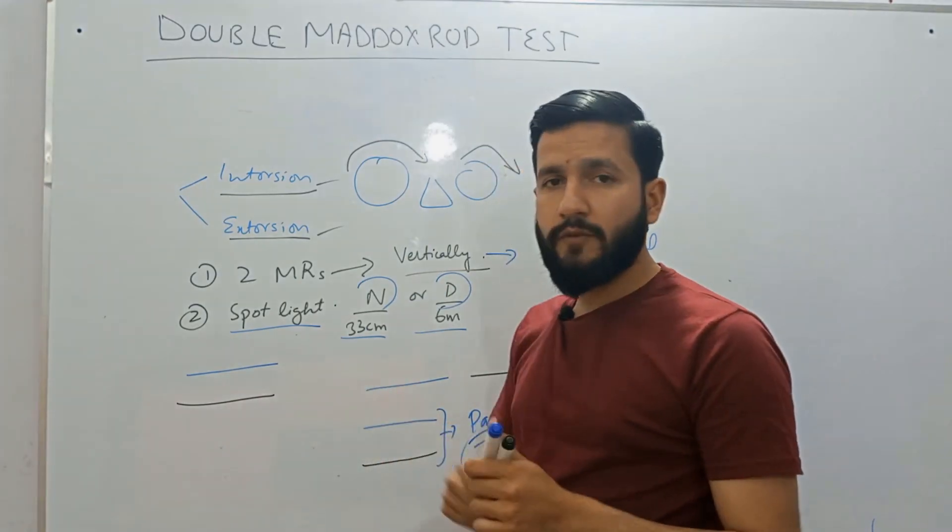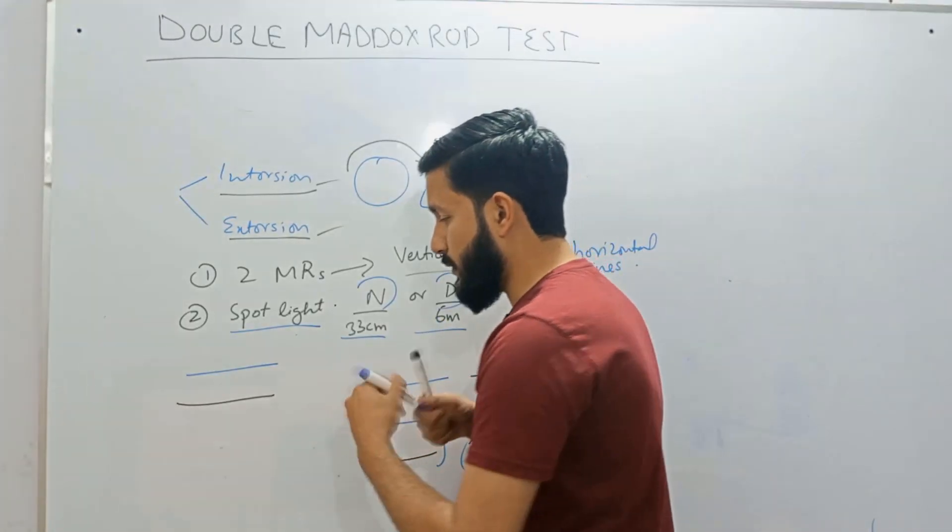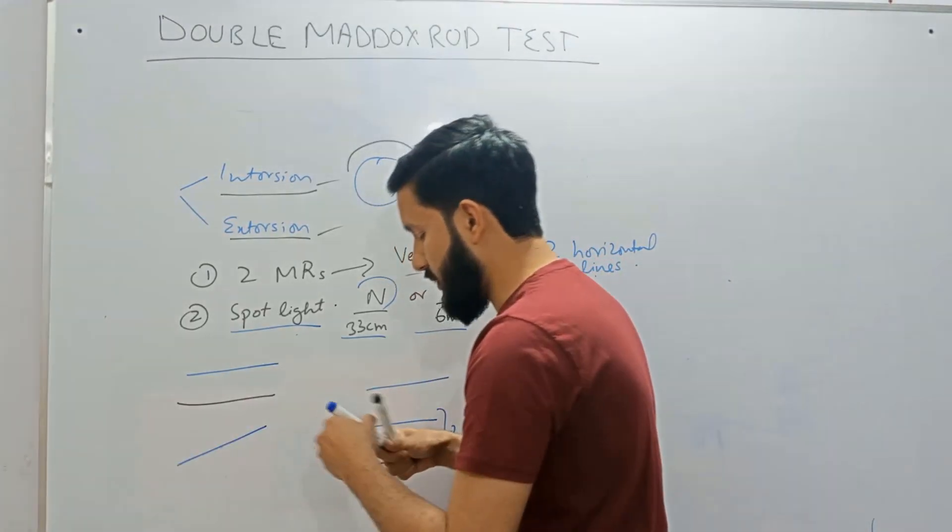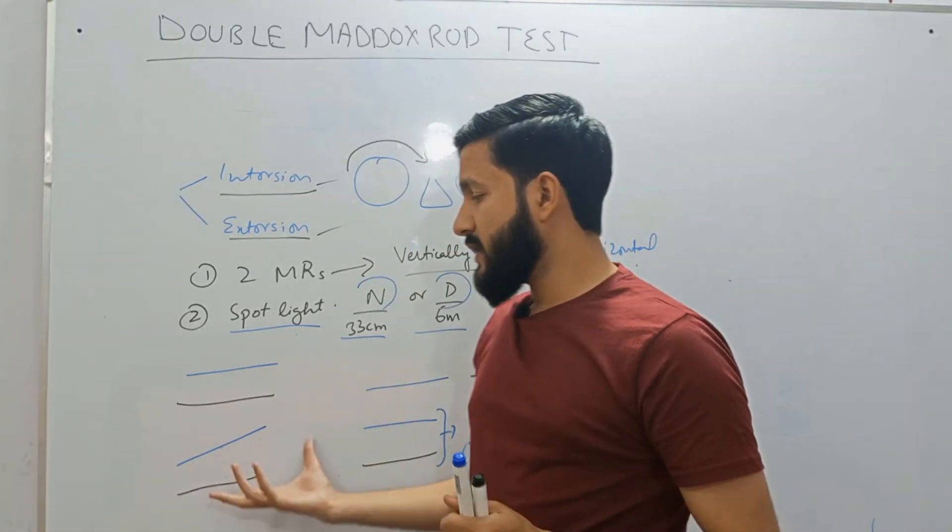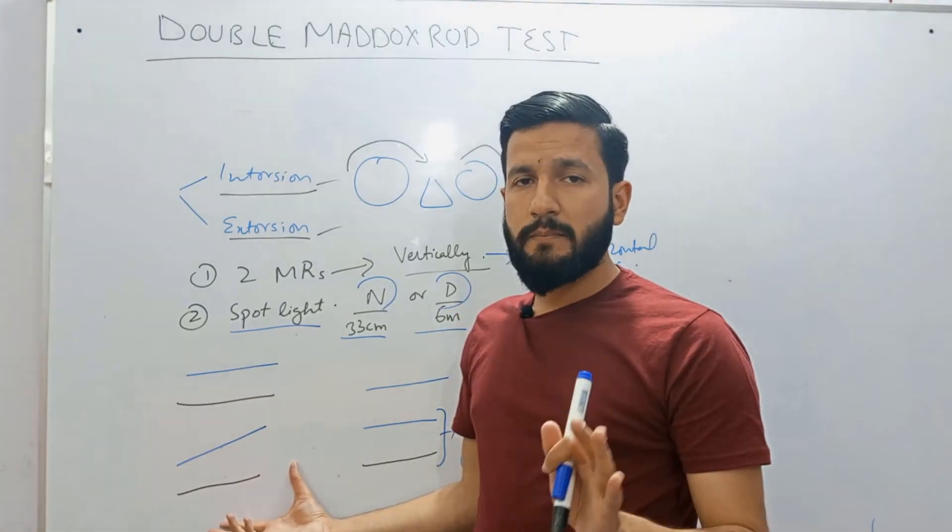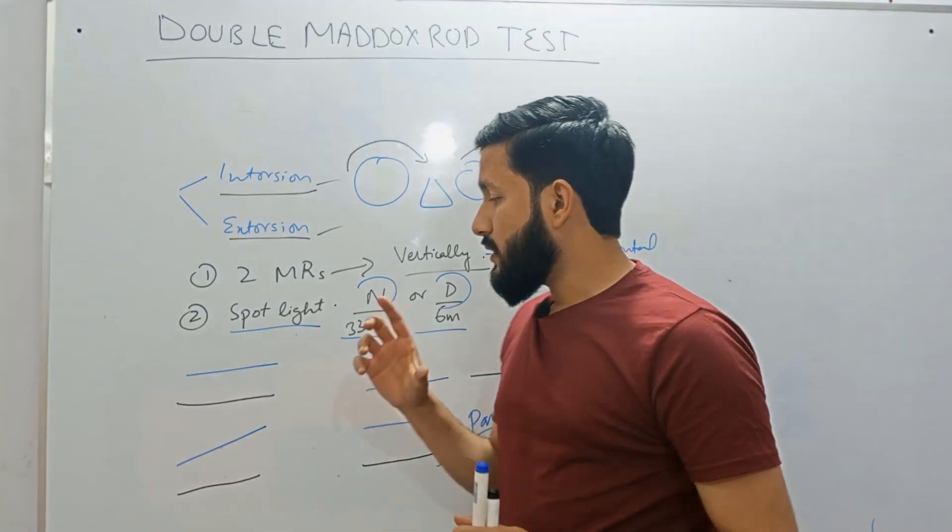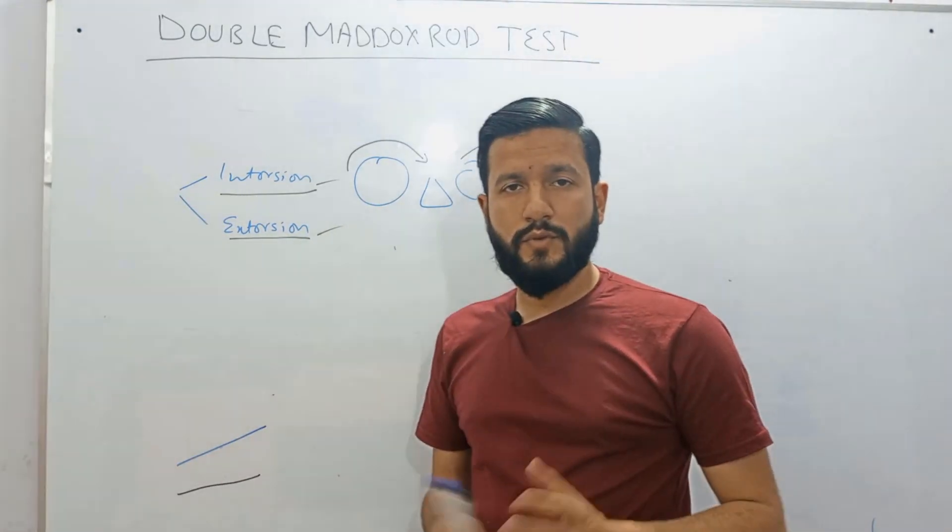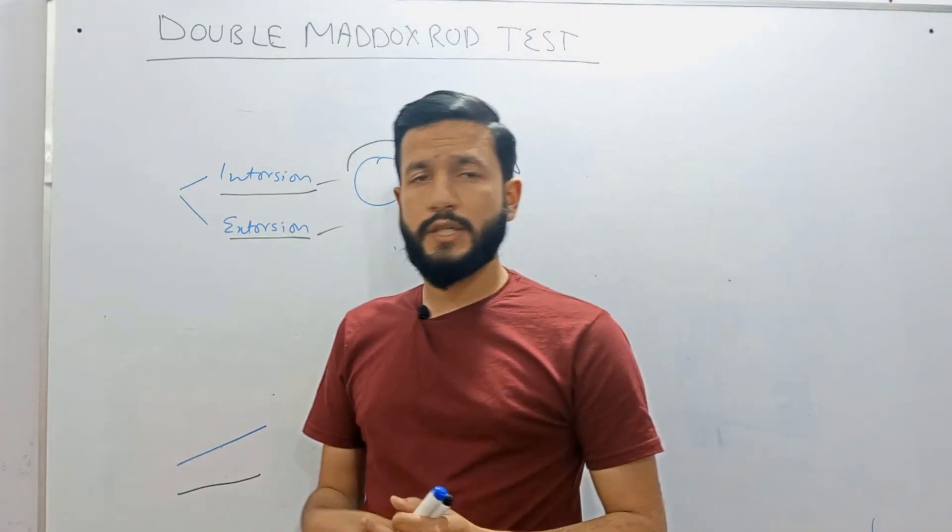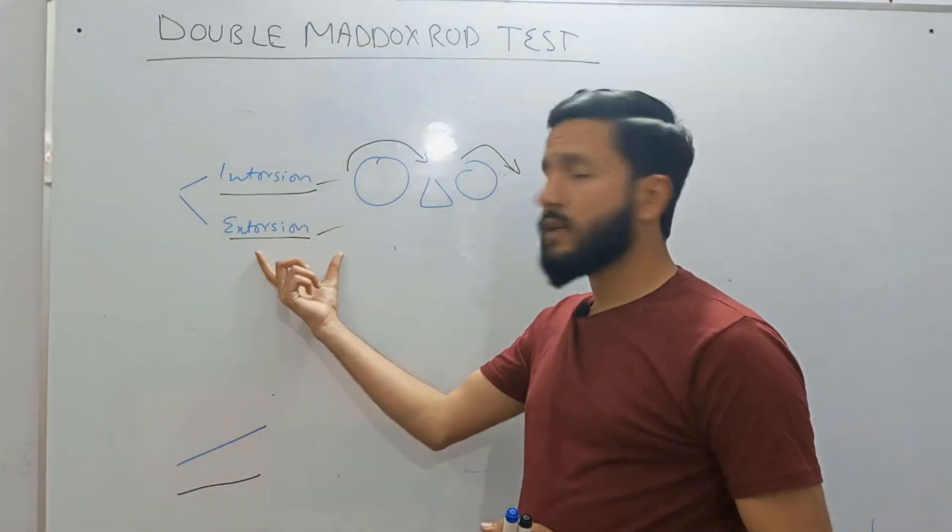However, if there is a tilt present in any one of the line, let's suppose in this direction, then it indicates that there is intorsion or extorsion present. And the patient will then rotate the Maddox rod. And the direction of rotation of Maddox rod will give you an indication whether it is intorsion or extorsion.